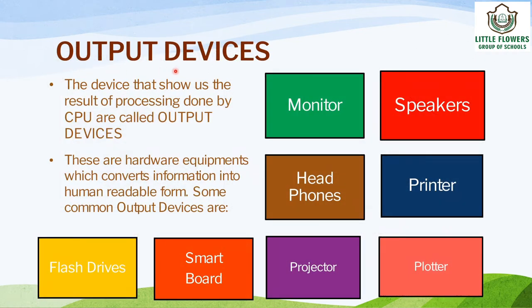Now let's learn about output devices. The devices that show us the result of processing done by the CPU are called output devices. These are hardware equipment which convert information into a human-readable form. Output displayed on the screen of a monitor is called a soft copy, while output printed on paper is called a hard copy. Some examples of output devices are: flash drives, smart boards, projector, plotter, printer, headphones, monitor, and speakers.